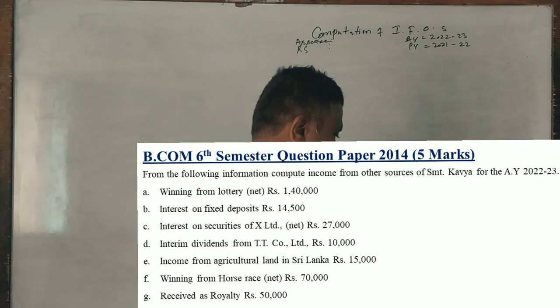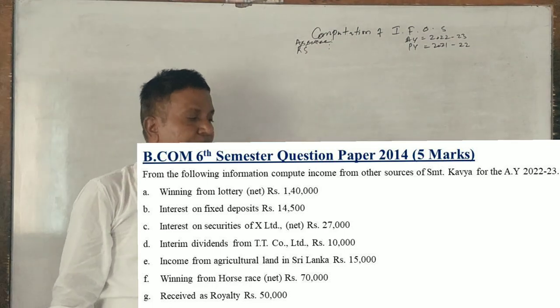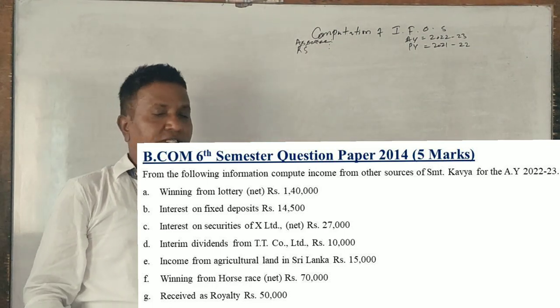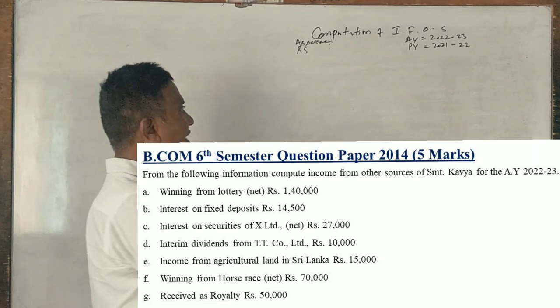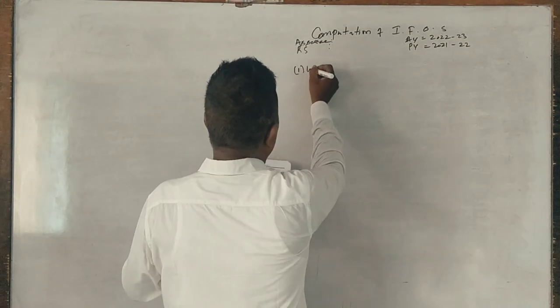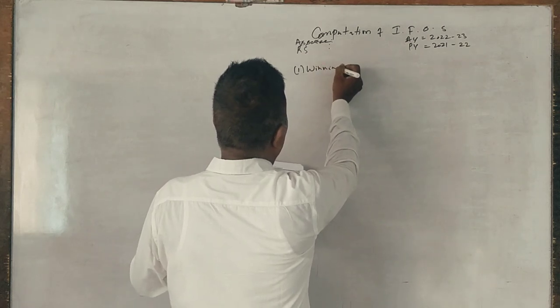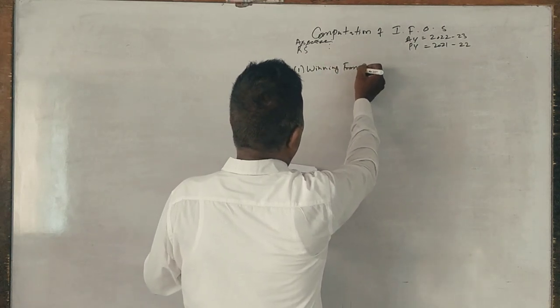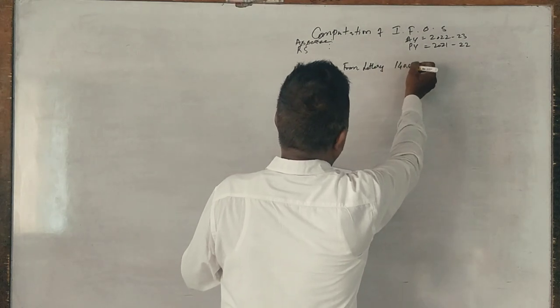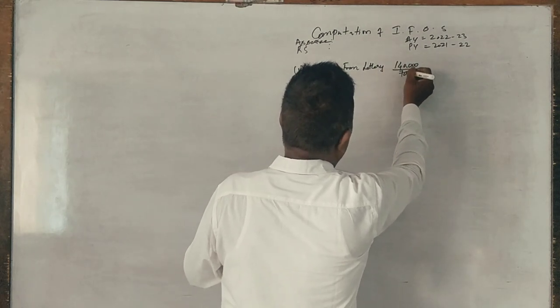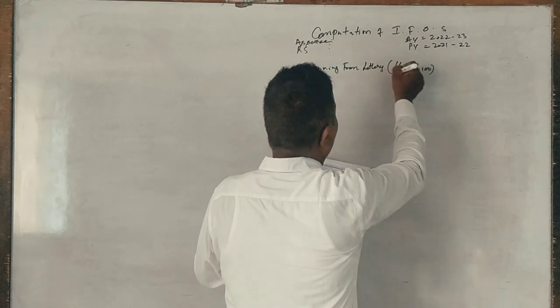So, 2014 question. From the following information, compute income from other sources of Kavya. Winning from lottery: 1,40,000 net amount divided by 70 into 100 equals 2,00,000.